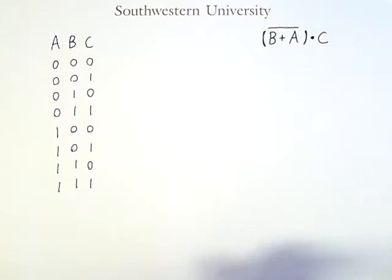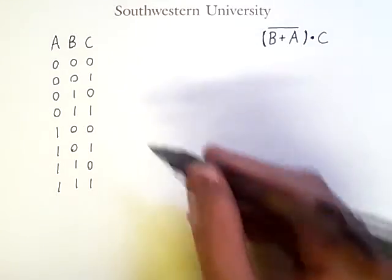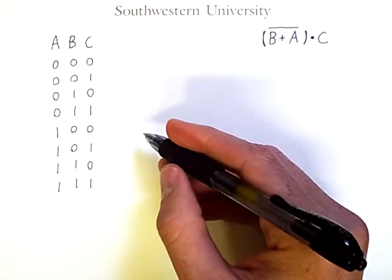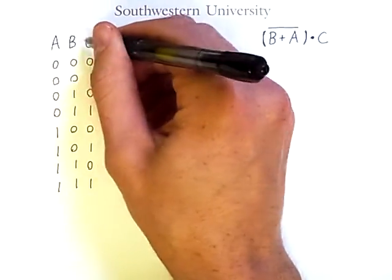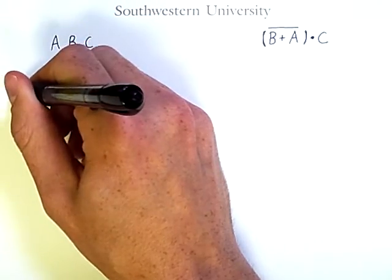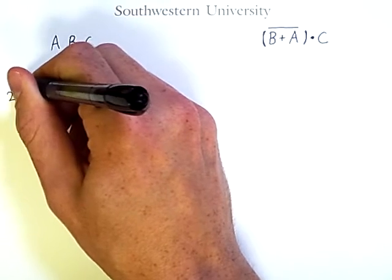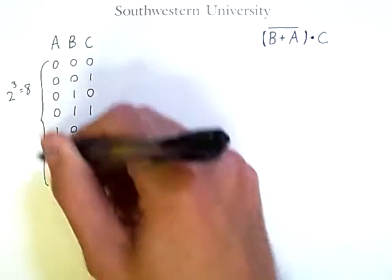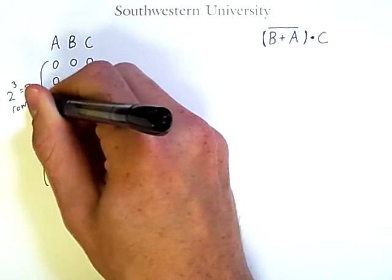Now a good self-check is that the number of rows in this table should be 2 raised to the number of variables. So we have three variables, so we should have 2 to the 3 equals 8 rows. And sure enough, we do.